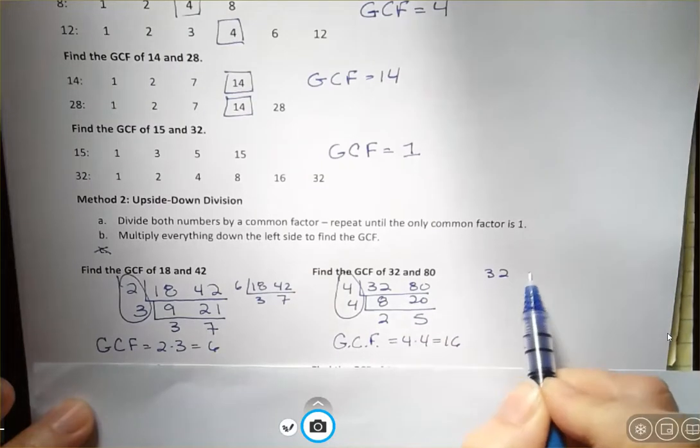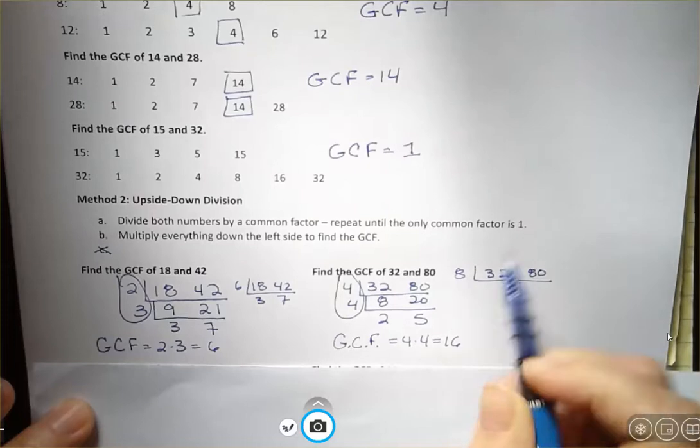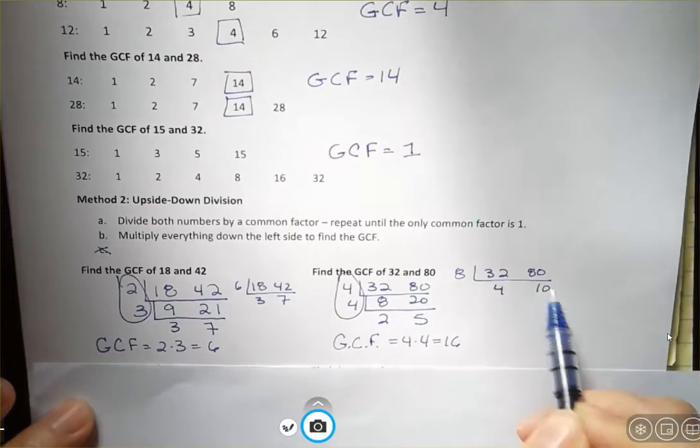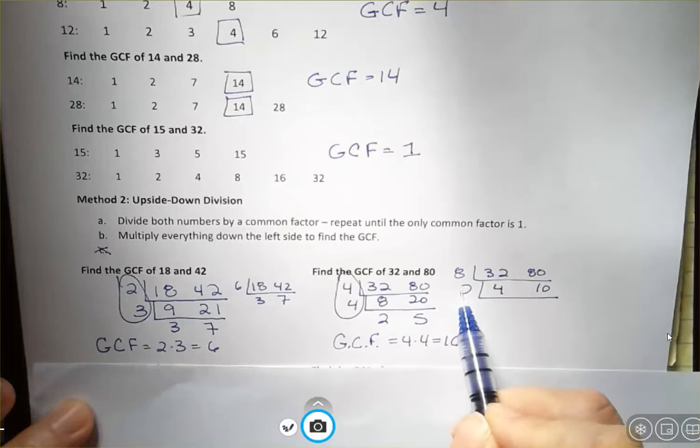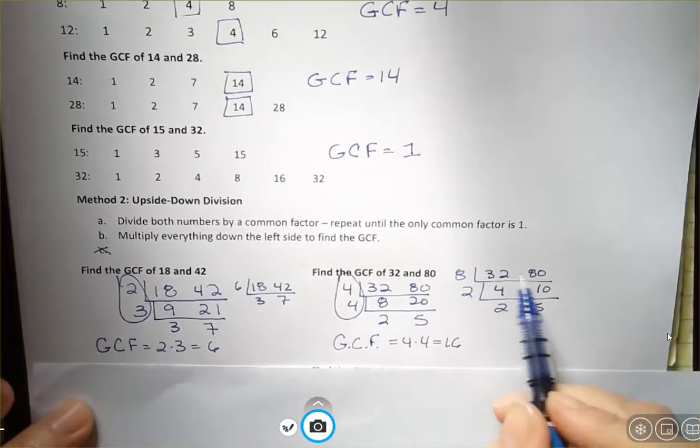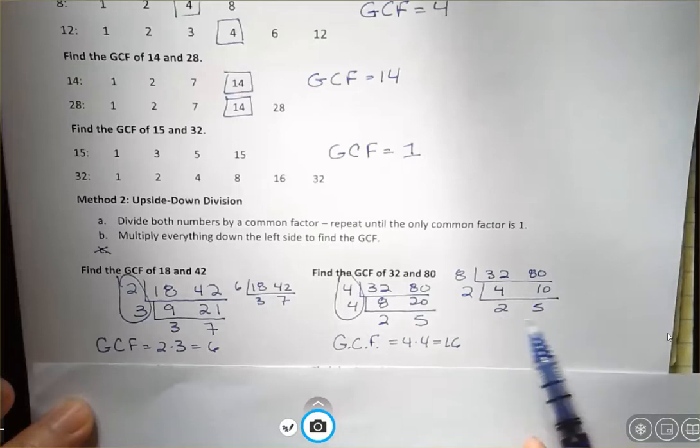Maybe you would have started this by saying, I noticed that eight goes into both of these. And then that would go four times and that would go 10 times. And then you'd say, but two goes, and you get back to eight times two, which is 16. Maybe you would have seen 16 right off the bat, or maybe you would have started with two. There's many different ways to get there. Don't stop until you have no common factor at the bottom, except for one.